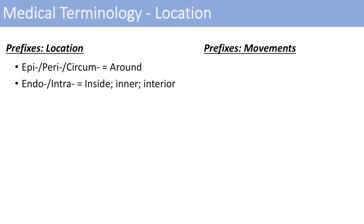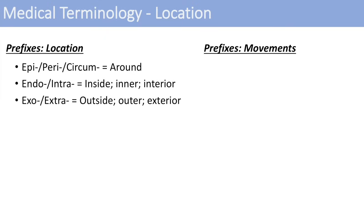The next ones are endo and intra — they mean pretty much the same thing: inside, inner, or interior. Think of intracellular or the endosome. The opposites of those are exo and extra, which mean outside, outer, or exterior. Think of exocytosis or the extracellular environment.